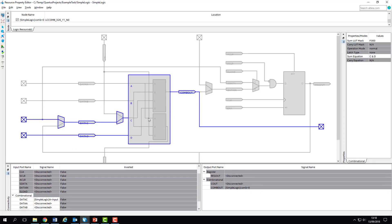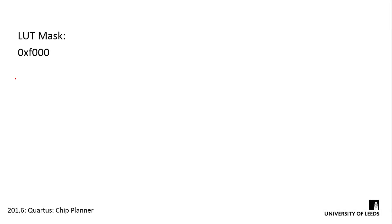So we've got two data lines coming in going into the lookup table. Now if we have a look at the window on the right, we can see that the properties of our lookup table are detailed here. We're interested in the sum lookup table mask, which has a value of F000, and the sum equation, which is displaying as C and D. So let's see if that matches up. Starting with our lookup table mask of F000, doing a quick conversion into binary gives us a value of 1111 followed by 12 zeros. So that's the mask for our lookup table.